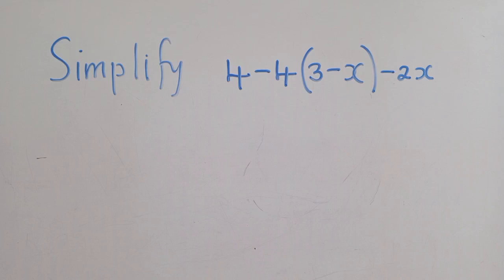So we've got a question here where they're saying simplify 4 minus 4, open bracket, 3 minus x, close bracket, minus 2x. So how do we get to simplify a question like this one?